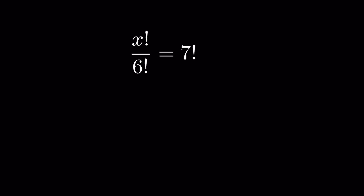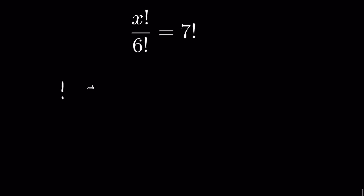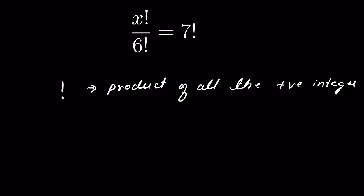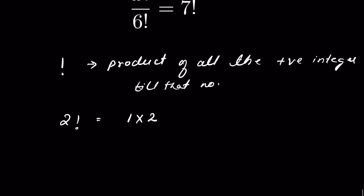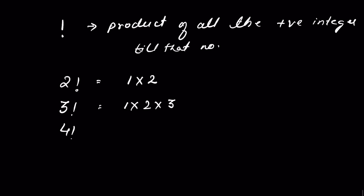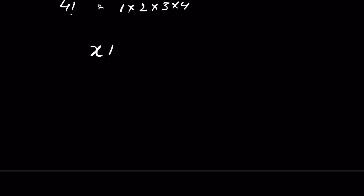x factorial upon 6 factorial is equal to 7 factorial — we have to find the value of x. First, let's understand what factorial means: factorial means the product of all positive integers up to that number. So 2 factorial is 1 times 2, 3 factorial is 1 times 2 times 3, 4 factorial is 1 times 2 times 3 times 4, and so on.